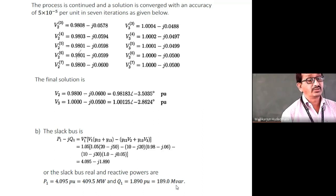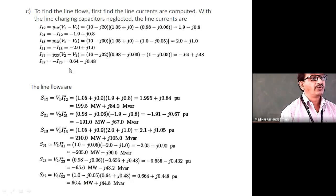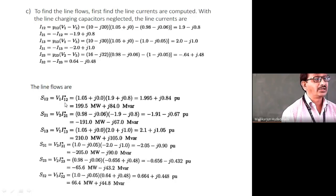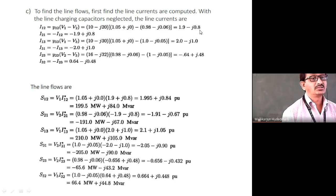To find complex power flows on transmission lines: S12 = V1·I12*, where I12 = (V1 − V2)·Y12 (elemental admittance). For the reverse, I21 = −I12 by sign convention. Similarly we compute I13, I31, I23, I32 from first principles. S12 and S21 are computed separately. If S12 + S21 = 0, the line is lossless. Since one side shows 199.5 MW and the other 191 MW, there is approximately 8 MW active power loss along the 1-2 element.